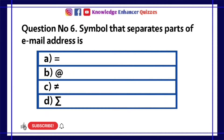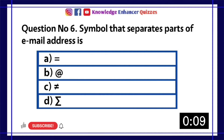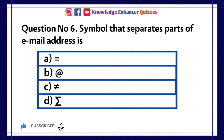Question number 6. Symbol that separates parts of email address is. A equals. B at. C does not equal. D summation. Option B is the right answer.